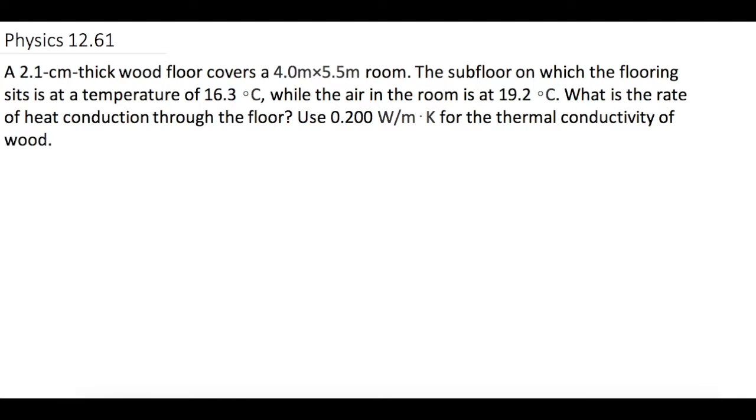Use 0.2 watts per meter Kelvin for the thermal conductivity of the wood. So we have our thermal conductivity equation, which is Q over change in time, is equal to K, or our thermal conductivity constant, times the cross-sectional area that we're looking at. That is all divided by the length or how deep or how high it is, and then all of that is times by the change in temperature.